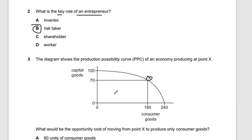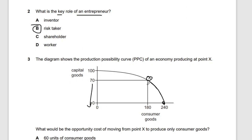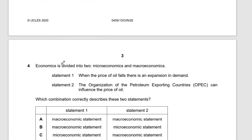Question three: the PPC shows an economy producing at point X (70 capital goods, 180 consumer goods). What is the opportunity cost of moving to producing only consumer goods (240)? You're losing all 70 units of capital goods. Opportunity cost is what you have forgone. The answer is B — 70 units of capital goods.